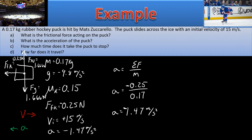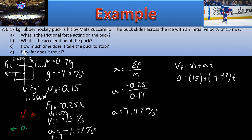How much time does it take to stop? The final velocity VF equals zero because it comes to a stop. We have VF, VI (positive 15 meters per second), A (negative 1.47 meters per second squared), and T. Using VF equals VI plus AT and solving, we get a positive time of 10.2 seconds. A negative divided by a negative gives a positive result.